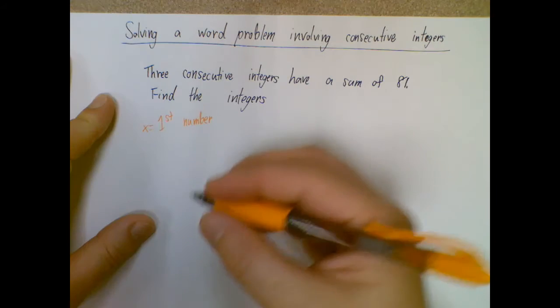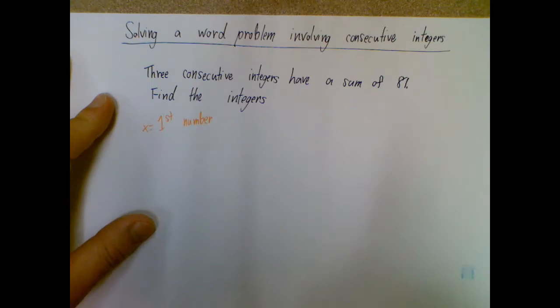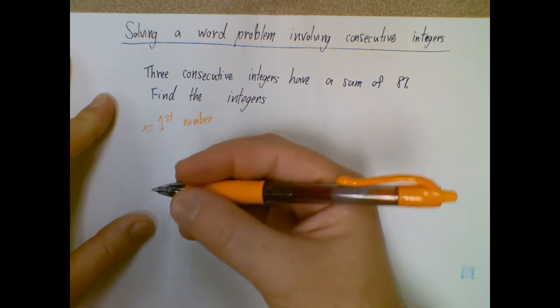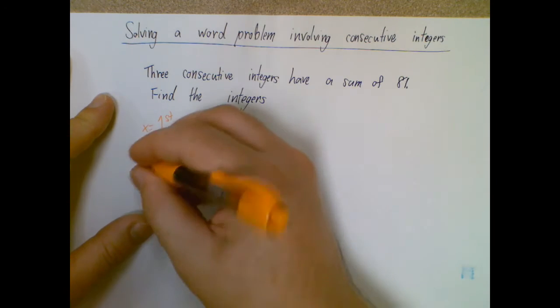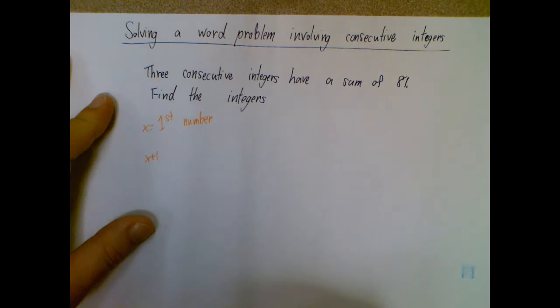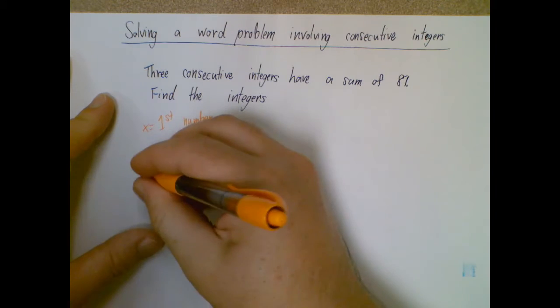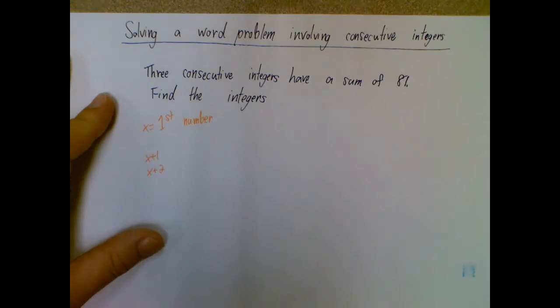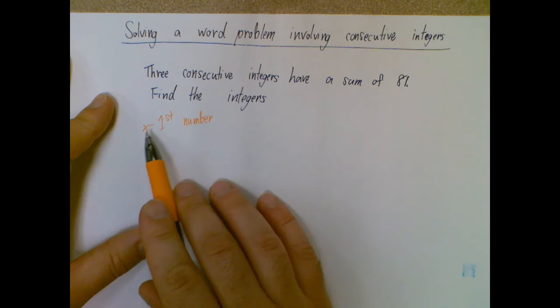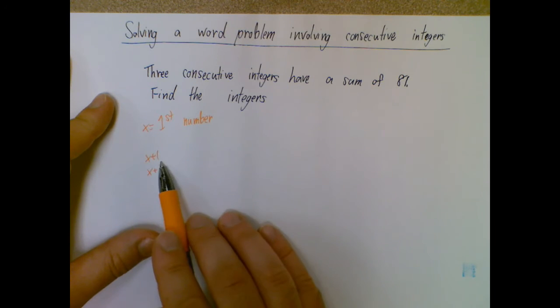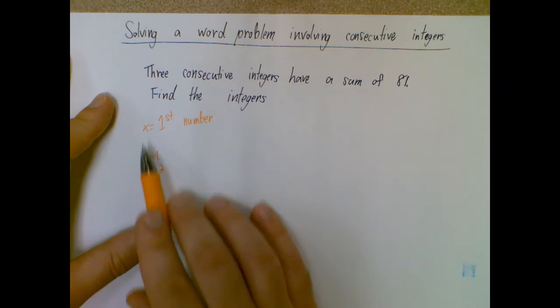So my integers then would be x. The next one would be one higher than x or x plus 1. And the one after that would be one higher than x plus 1, which would be x plus 2. For example, using our one from earlier, if this is 6, 6 plus 1 is 7, 6 plus 2 is 8. So 6, 7, 8.